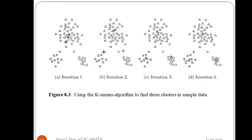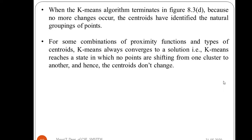Some algorithms may converge in four iterations, while for other data points you may need further calculations. It all depends on the type of data objects you have. For some combinations of proximity functions and types of centroids, k-means always converges — reaching a state where no points shift from one cluster to another and centroids do not change. For cases where it may not converge, you fix a threshold and end the iteration.